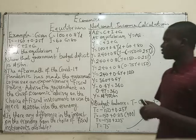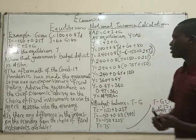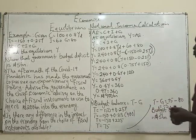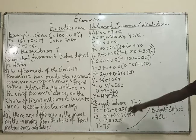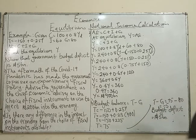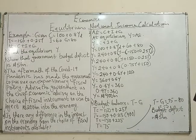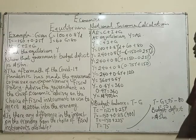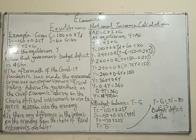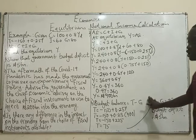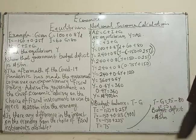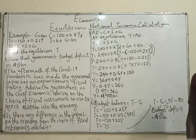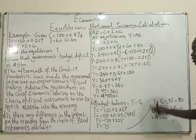Now the second question: show that the government's budget deficit is 5 billion. The budget balance is just tax revenue minus government spending. If this is positive, there's a budget surplus; if negative, there's a budget deficit; and if zero, the budget is balanced. We need to prove that T minus G is negative.